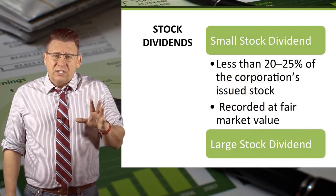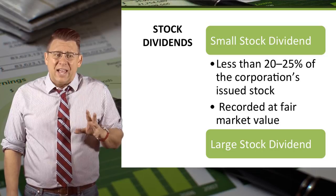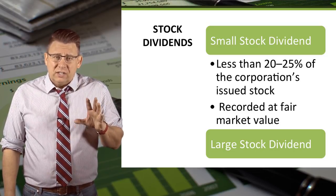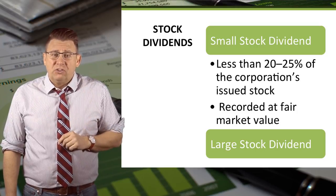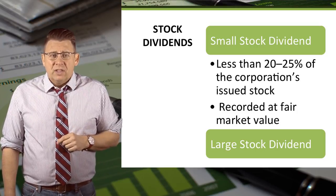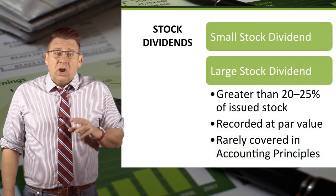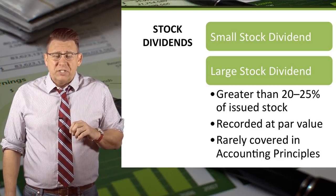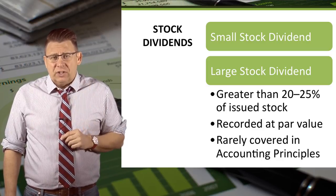Accounting for stock dividends falls into two categories depending on the size of the stock distribution. Small stock dividends are usually less than 25% of the issued stock — you will see an example of this size shortly. Large stock dividends are usually more than 25% of the issued stock and are not covered in this video.